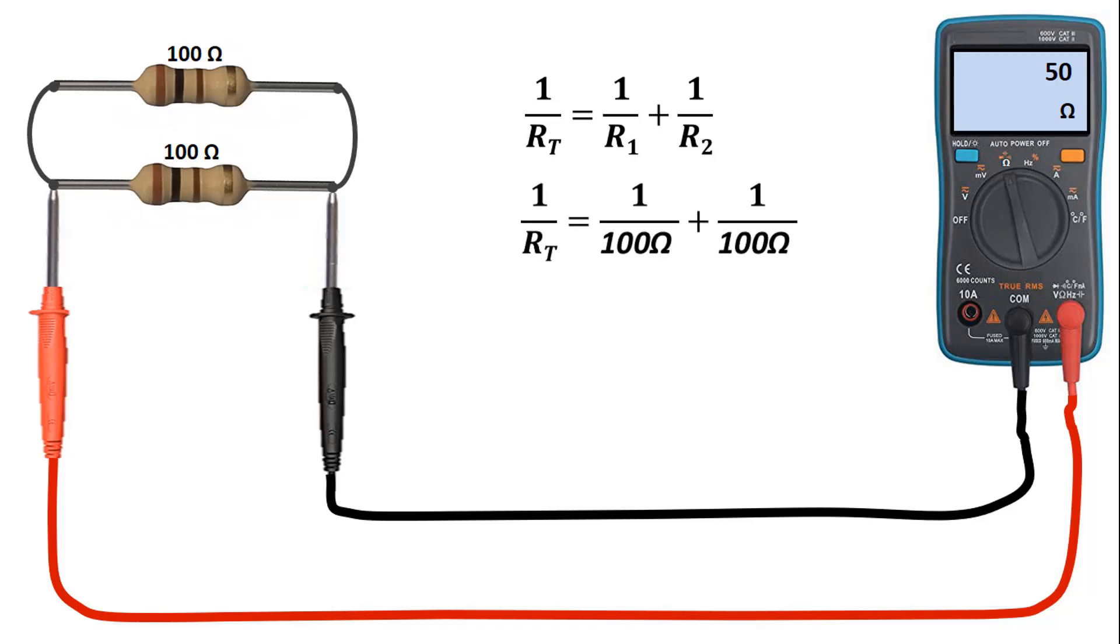For example, as you can see here, if we connect two 100 ohm resistors in parallel and measure the total resistance with the help of a multimeter, we see the total value of the inverse of the two: 50 ohm.